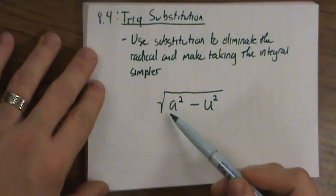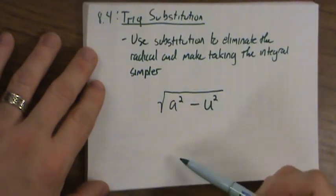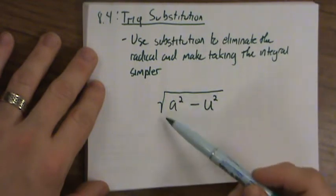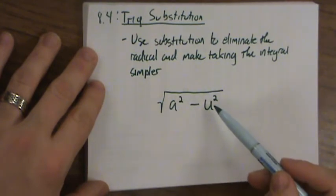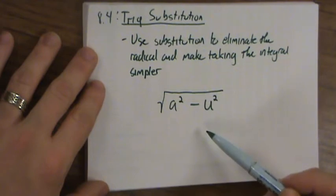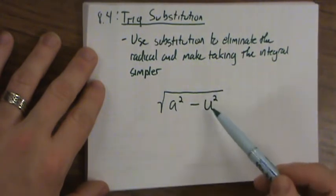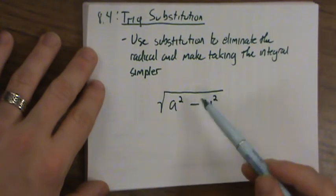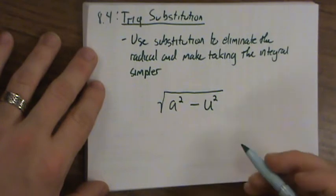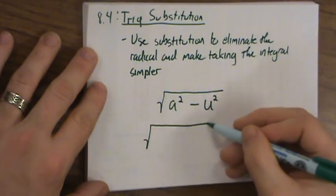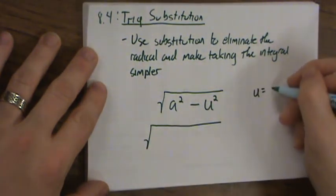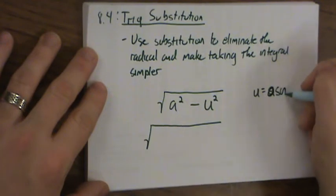And what I want you to notice is a is a number and u is a function. So when I look at this, I see that if this number were 1 and this function were the sine of theta, then wouldn't that be nice because this would be 1 minus sine theta, or actually since it gets squared, 1 minus sine squared theta. So let's see what happens if we did the substitution u equals a times the sine of theta.